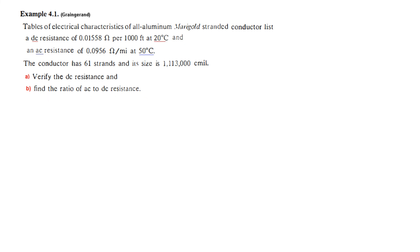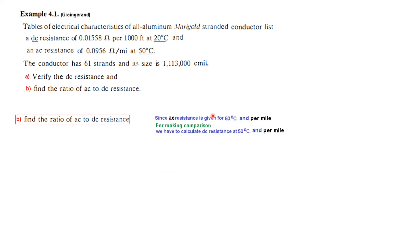Now we calculate the ratio of AC to DC resistance. The AC resistance is given at 50 degrees centigrade and per mile. For comparison, we need to calculate the DC resistance at 50 degrees centigrade and per mile. We first apply the temperature correction formula to convert DC resistance from 20 degrees to 50 degrees.